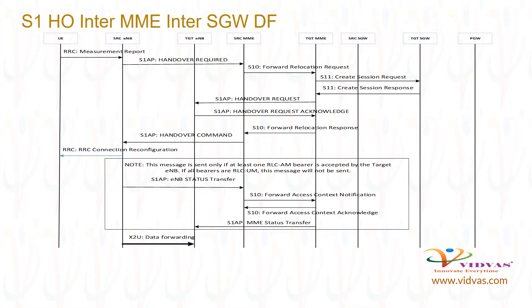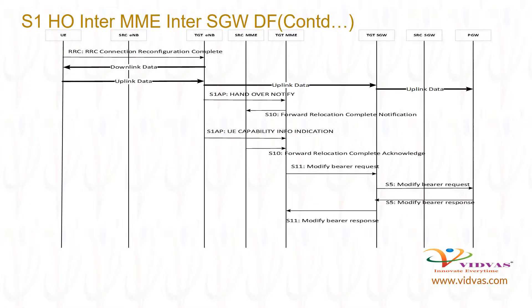If there is any uplink or downlink data received at source ENB from or for the UE, source ENB forwards the data to target ENB by sending X2U data forwarding message. This is because handover is in progress. Target ENB takes responsibility of sending the UE data. Target ENB may buffer the data received from source ENB until it receives RRC Connection Reconfiguration Complete message from the UE. After receiving RRC Connection Reconfiguration Complete from UE, target ENB forwards buffered downlink data to UE, and forwards buffered uplink data to internet via target SGW and PGW.